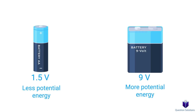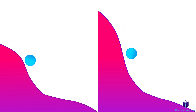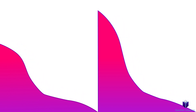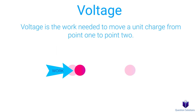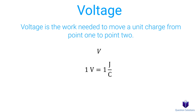You can think of voltage as the potential energy stored in a circuit, similar to gravity. Imagine a ball on top of a hill — the taller the hill, the more potential energy the ball has, and it will roll down due to gravitational potential energy. Similarly, charges move through a circuit due to voltage. Another way to think of it: voltage is the work needed to move a charge from point one to point two. It's represented with V and the unit is the volt; one volt equals one joule per coulomb.